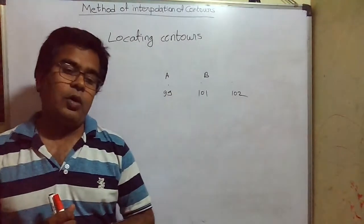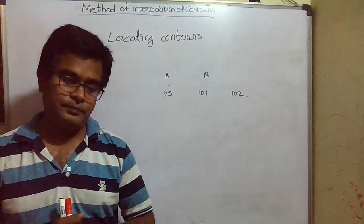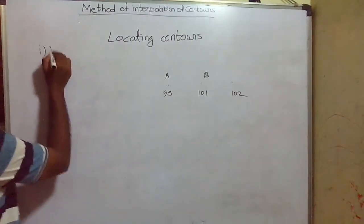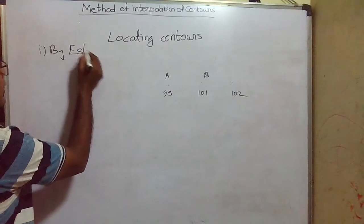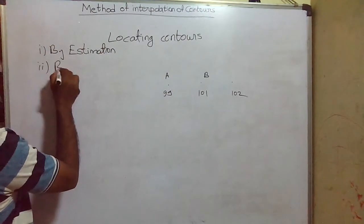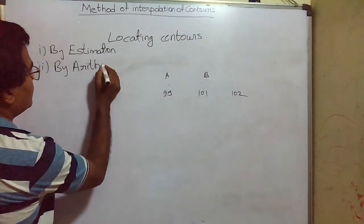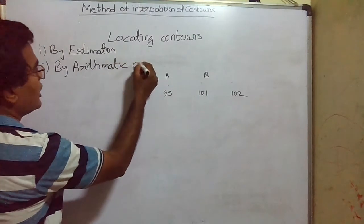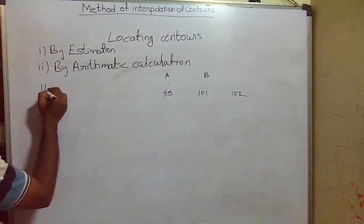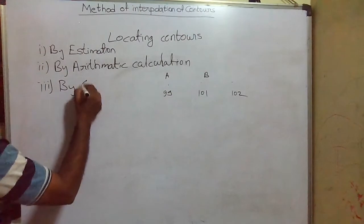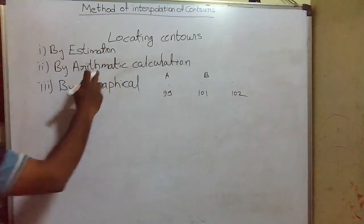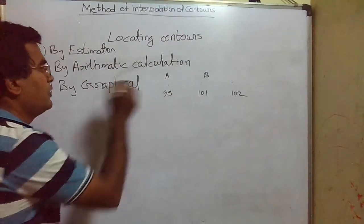That process of locating contours is called interpolation. There are different methods of interpolating contours: one is by estimation, second is by arithmetic calculation, and the third one is the graphical method. These are the three methods of interpolation of contours.